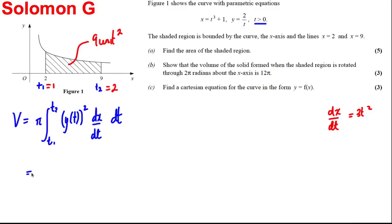Okay, and we're ready to substitute in. Here is pi, the integral between 1 and 2, y squared, which is going to be 4 over t squared, multiplied by dx by dt, which is 3t squared with respect to t.